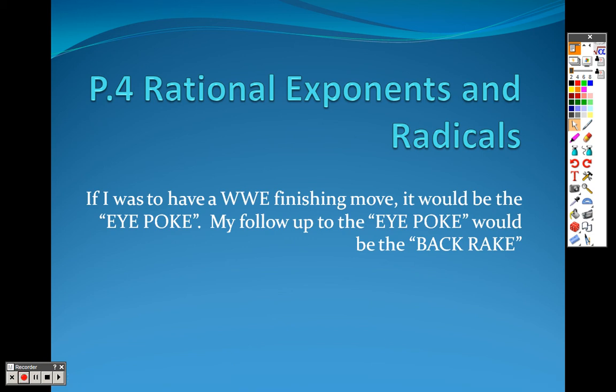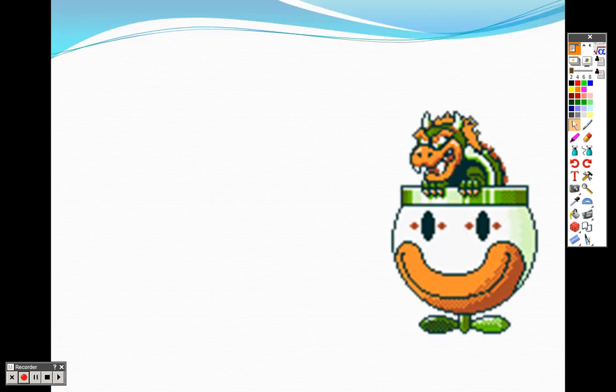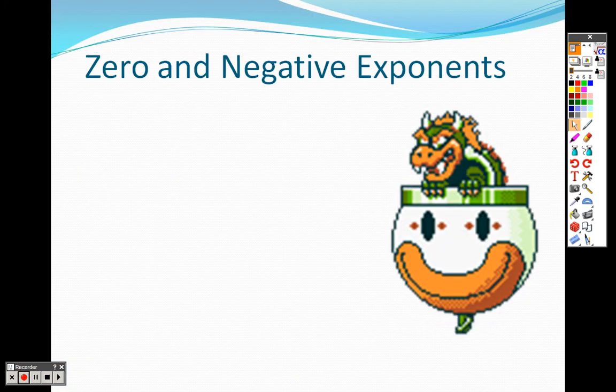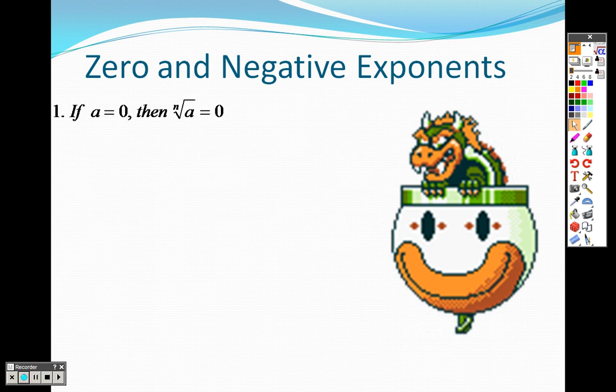Okay, so we are now still in the prerequisite section of trig. We are on lesson P.4, the fourth prerequisite section on rational exponents and radicals.